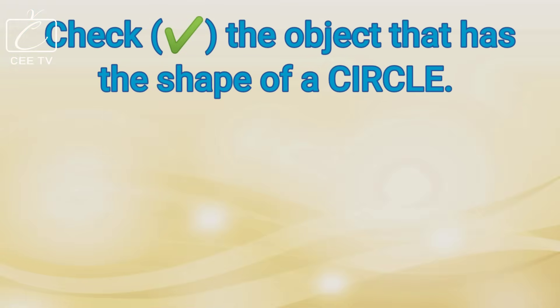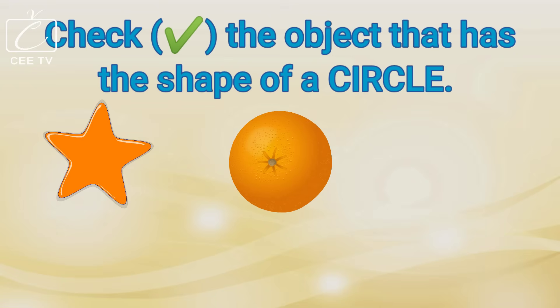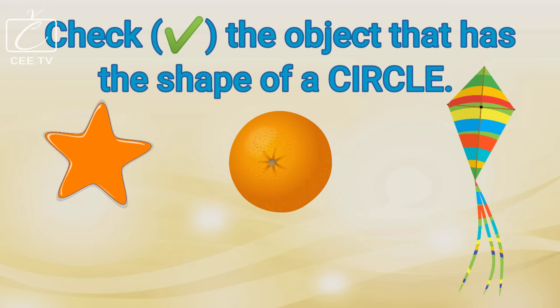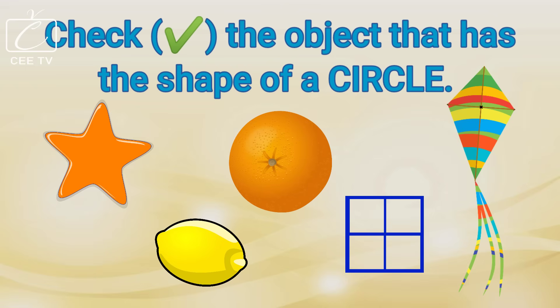Check the object that has the shape of a circle. The orange has the shape of a circle. Very good! The orange has the shape of a circle.